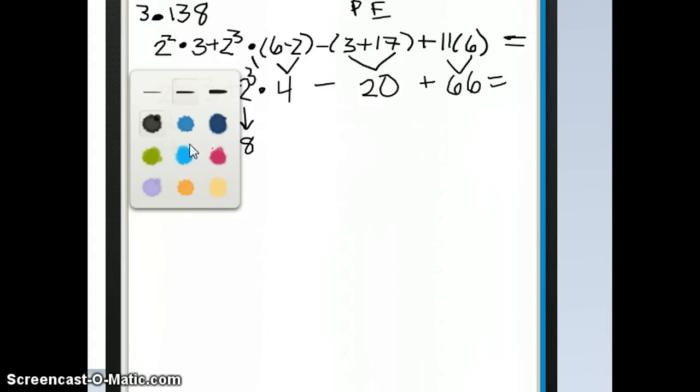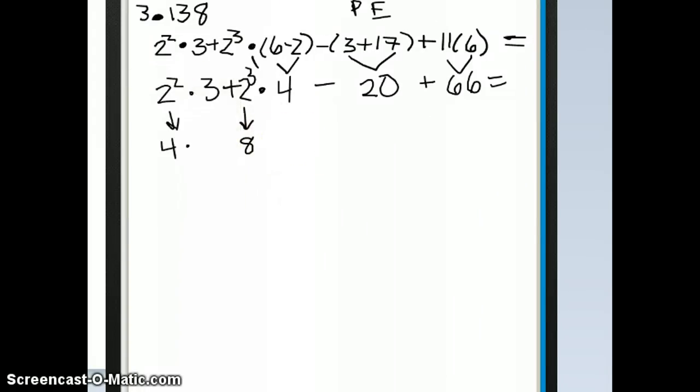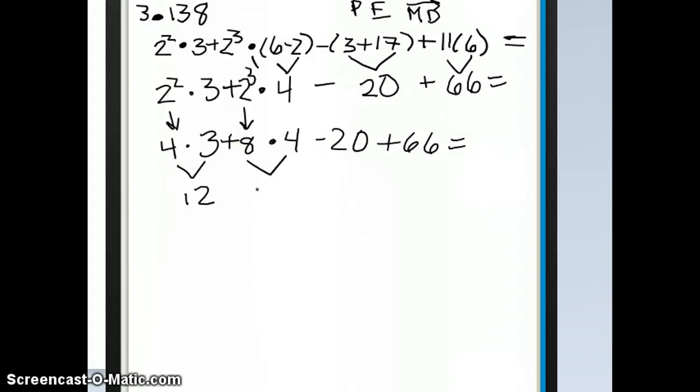So I'm going to then copy the rest of the problem just like it is, and then we'll go on to our next step. Our next step is to solve multiplication and division in the order that they come from left to right in the problem. So in this problem we do have 2 multiplication problems to do. 4 times 3 is 12, and 8 times 4 is 32.